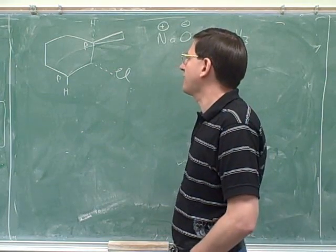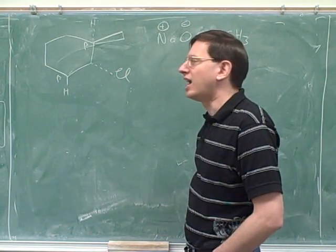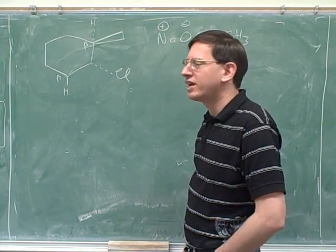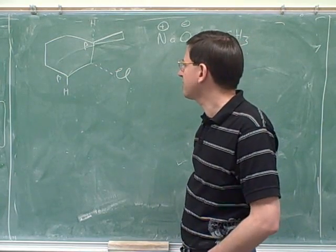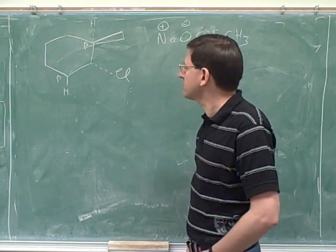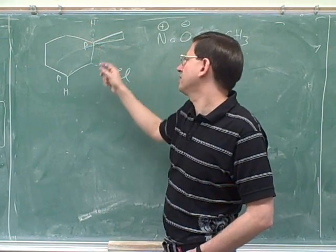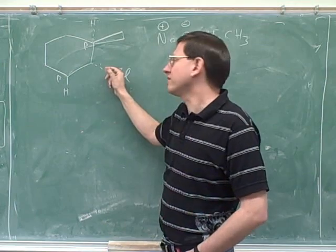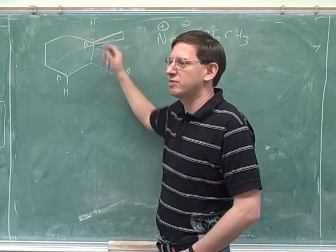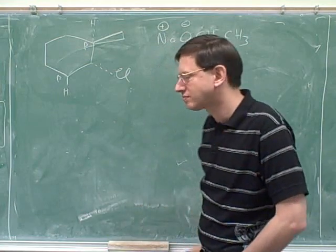You should ask: is there any kind of chair flip we could do to make them both anti? You could solve this by actually drawing the chair, but it's not really necessary here. Clearly, there's no way these could ever be pointing opposite to each other, because they're always going to be pointing to the same side of the ring - both always pointing down. There's no way they can be anti to each other.